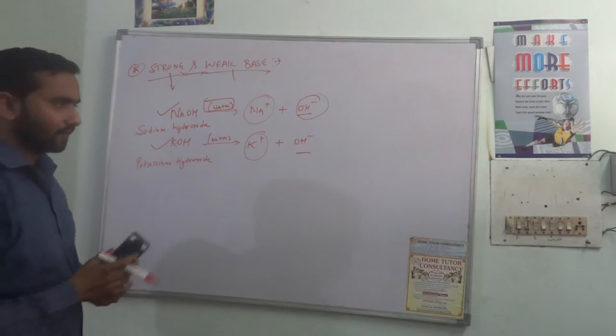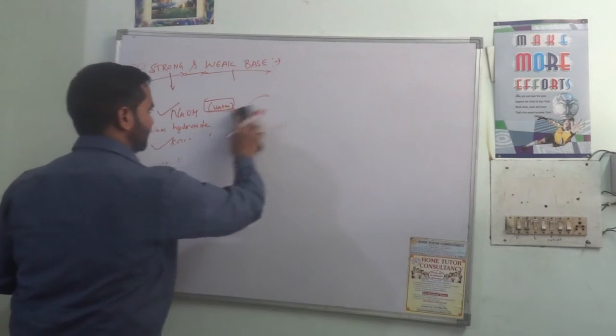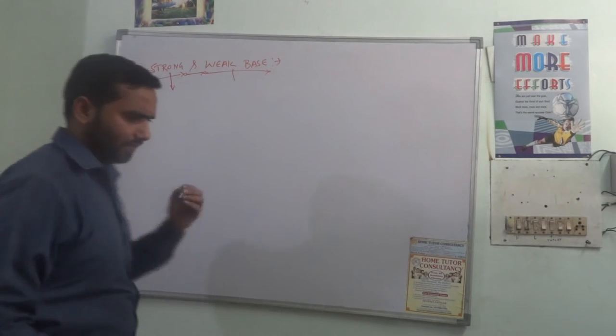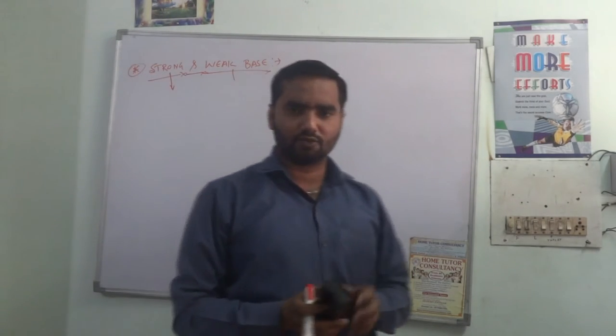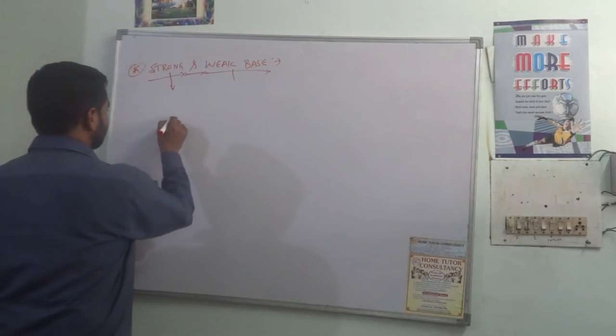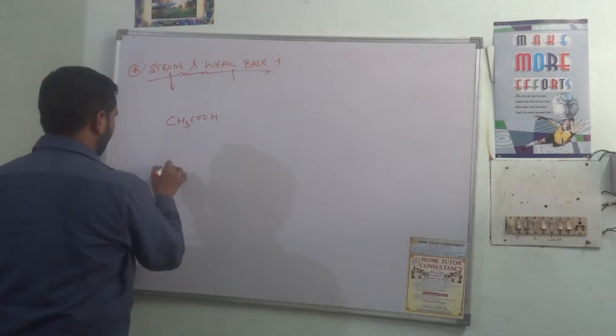Weak bases. Weak base is the base in which ionization occurs but OH- or hydroxyl ion release is very slow or very low. For example, acetic acid and formic acid.